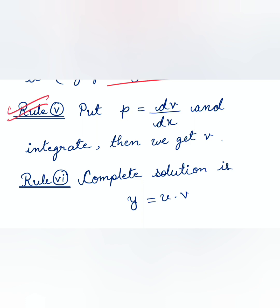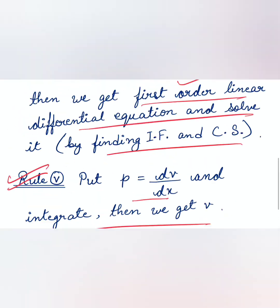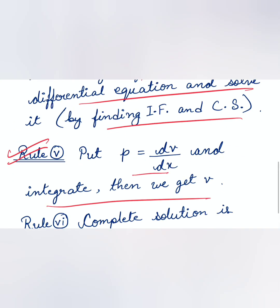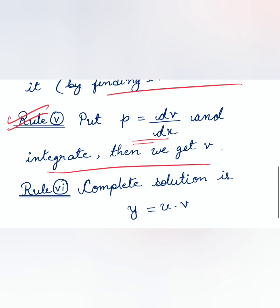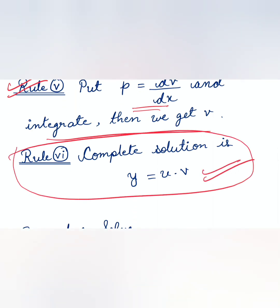In Rule 5, we put dv/dx = p and then integrate to get the value of v. After that, the complete solution y = uv is obtained. These are the six rules for finding the solution by the method of reduction of order.